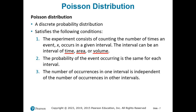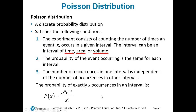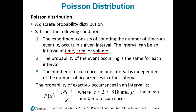The probability of exactly x occurrences in an interval is mu — the mean — raised to the power of x, times e — an irrational number, approximately 2.71, not a variable — raised to the power of negative mu, all divided by x factorial. Where e is approximately 2.71828 and mu is the mean number of occurrences. That one looks like a bear, but let's look at an example.